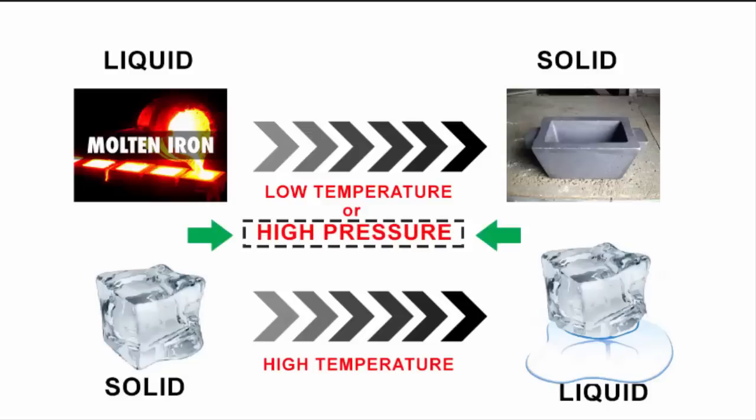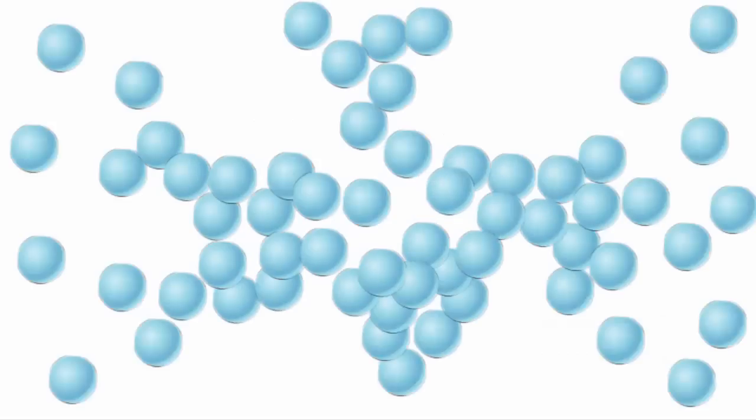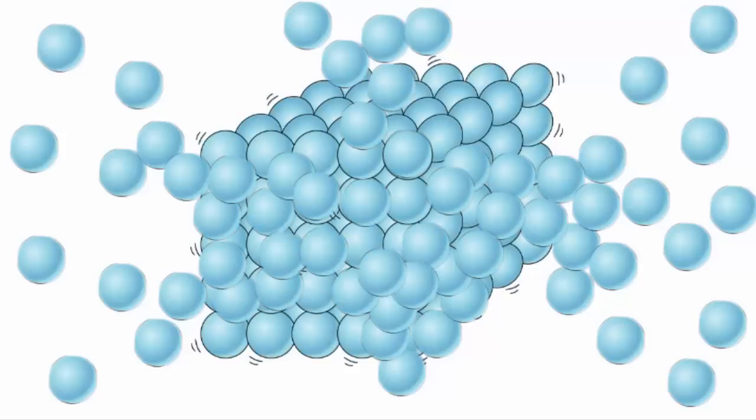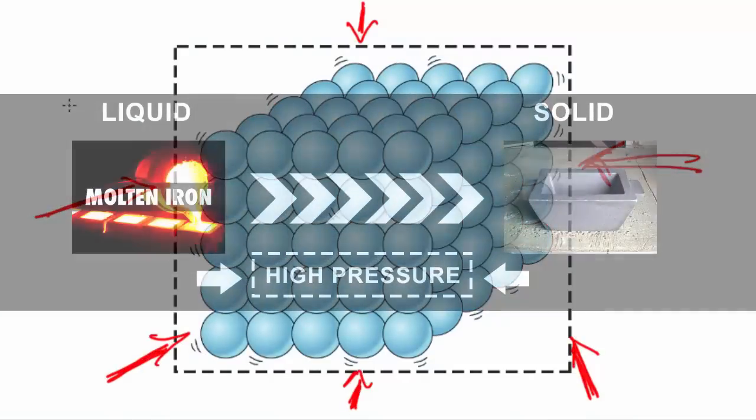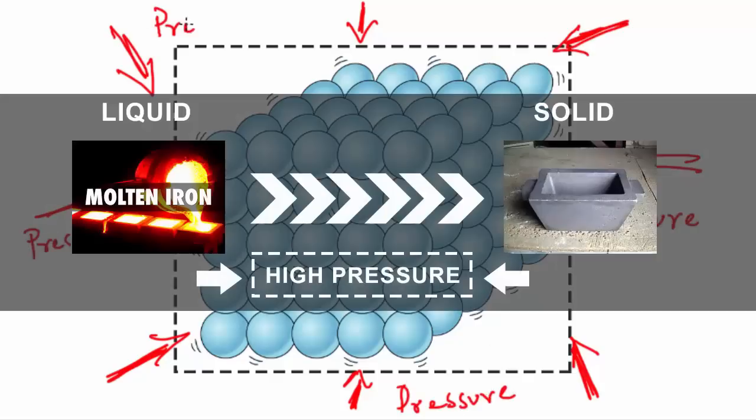But why do materials change from liquid to solid at higher pressure? For almost all materials, except water, atoms are packed closer together in the solid state than in the liquid state. So when you squeeze the atoms together with high pressure, the material changes from liquid to solid.